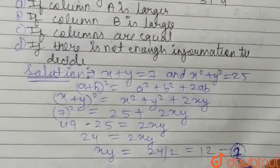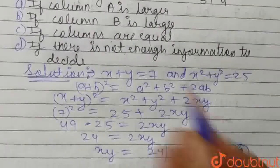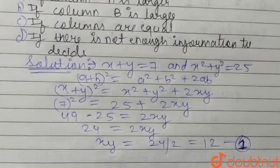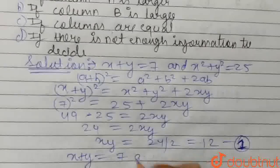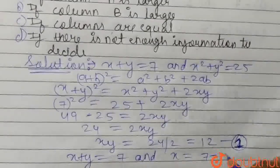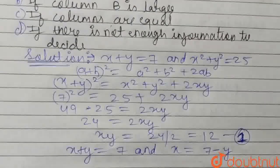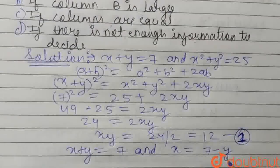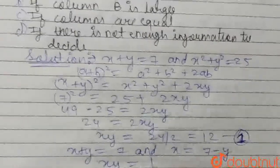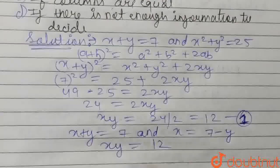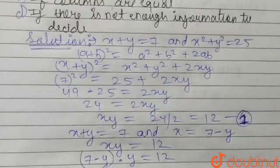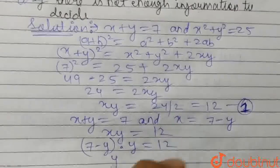Name this equation number 1: xy equals 12. We know that x plus y equals 7, so if we take x equals 7 minus y, and substitute the value of x into equation number 1, which is xy equals 12, we get (7 minus y) times y equals 12.